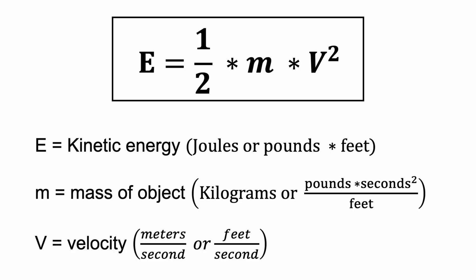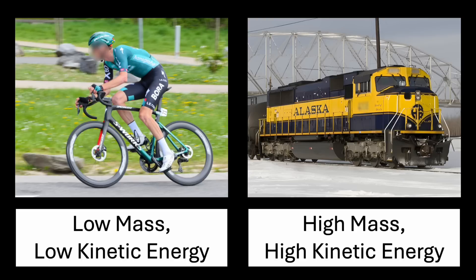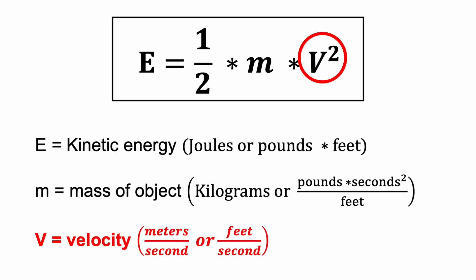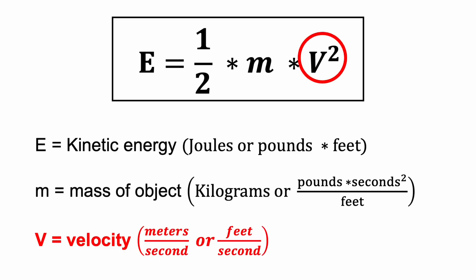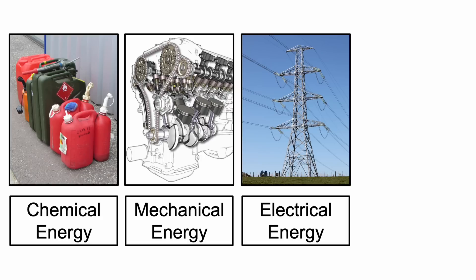The second form of energy we'll be considering is kinetic energy, which is energy from a moving object. Kinetic energy is calculated by the equation shown here. The first term we'll notice is the mass of the object — larger and heavier moving objects have more kinetic energy than smaller ones. The second term is the speed of the object — faster moving objects have more kinetic energy than slower ones. There are other forms of energy as well, including chemical energy, mechanical energy, electrical energy, and heat energy.